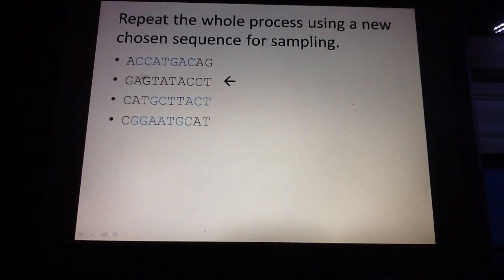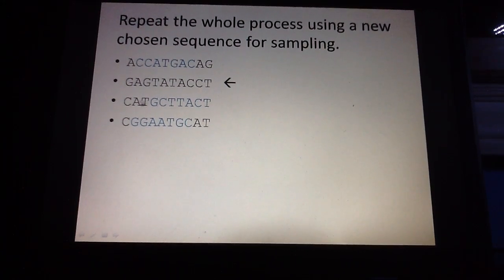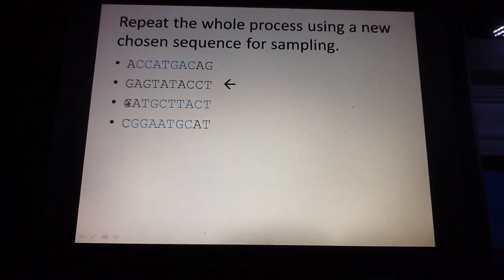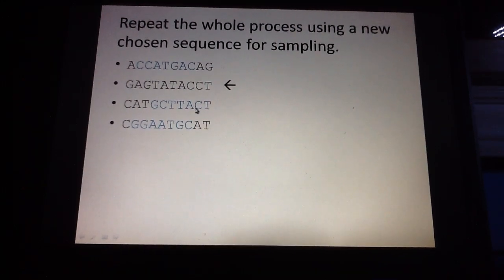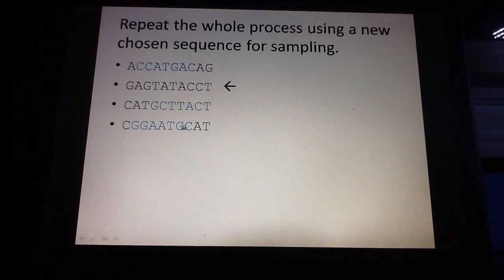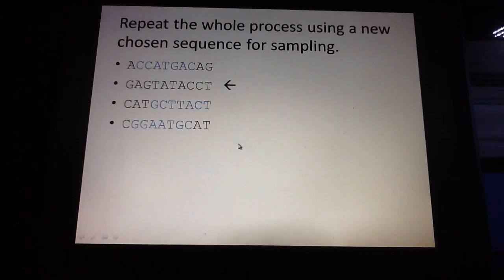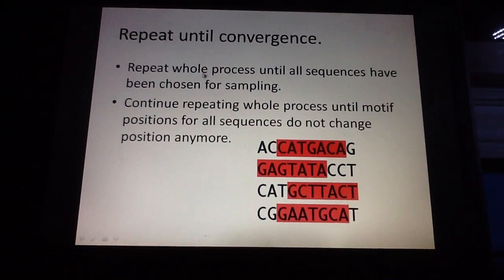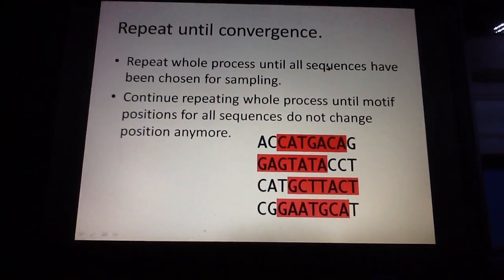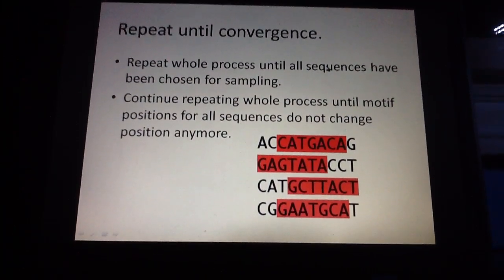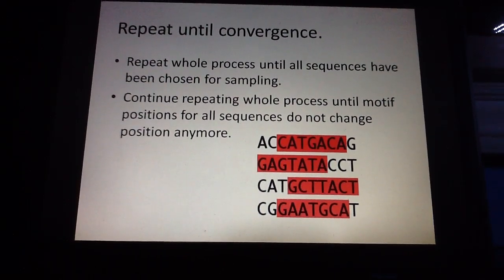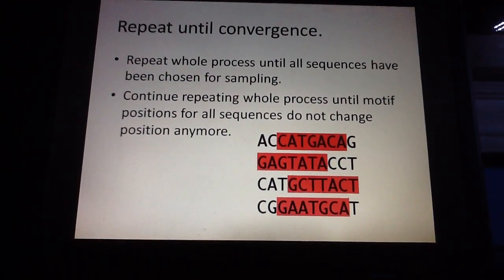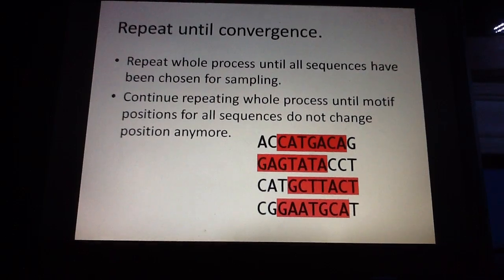Once we're finished with the second sequence, we do it for the third sequence — we repeat the whole process for the third sequence — and then once we're finished with the third sequence, we repeat it for the fourth sequence. We iterate the whole process through each of the sequences for which we want to obtain the motif positions.